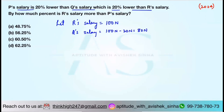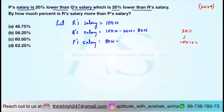Next, P's salary is 20% lesser than Q's salary. Q's salary is 80N, so we subtract 20% of 80N. I have already said that 20% can be applied as 10% plus 10%. 10% of 80N is 8N, so 20% will be 16N. Therefore, 80N minus 16N gives us 64N.